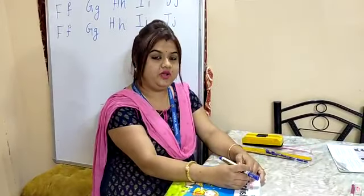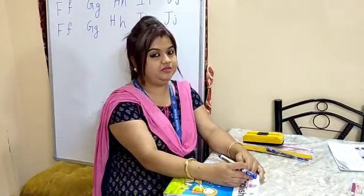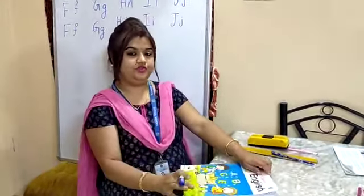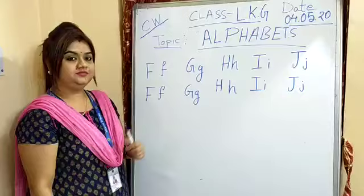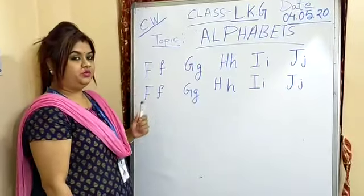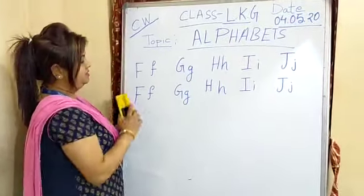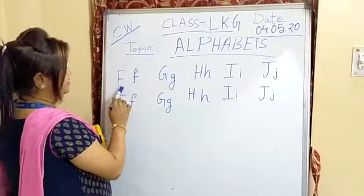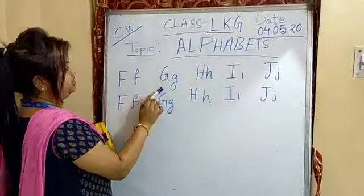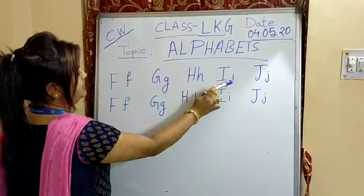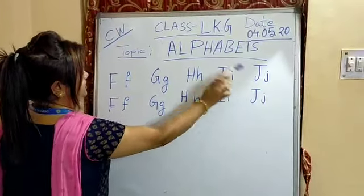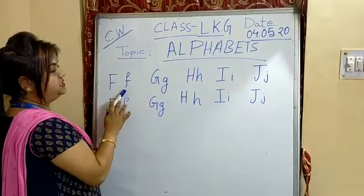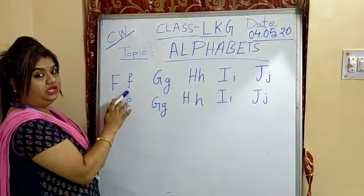So let's start from F. Look at the board, children. I will do it for you. I have already written F, G, H, I, J on the board. Capital F and this is small f.